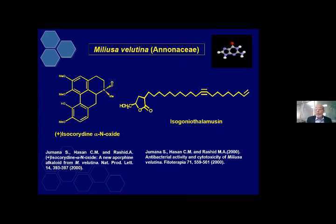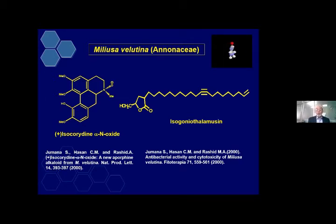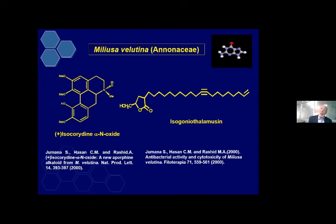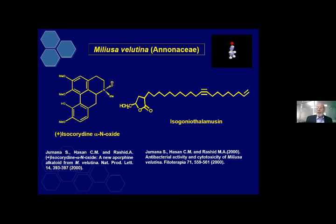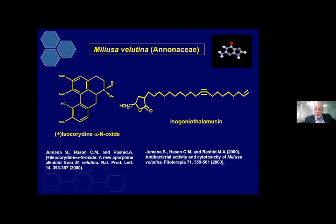Then Milusa velutina and Annonaceae — we isolated these polyketide compounds, new compounds. Another one is isogoniothalamicin, a name we gave. This is a new compound containing only 27 carbons. As I said, most acetogenins are 35 or 37 carbons. 27-carbon-containing acetogenins are very uncommon — very rare. There may be only 10 or 11 compounds of this series reported all over the world. Published one in Natural Product Letters and one in Phytotherapy.